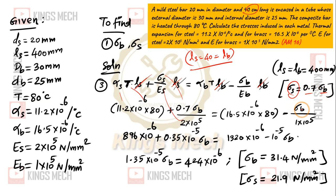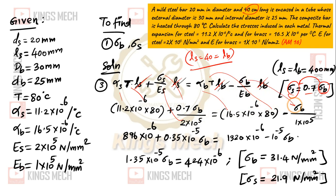We have to take it as sigma B and sigma S. Temperature is 80 degrees Celsius. Stress is the same. EB value is 1 into 10 power 5. So 0.7 divided by 2, 1 divided by 1.5, 1 into 10 power 5. This gives 11 into 80 and 16 into 80, multiply those values.